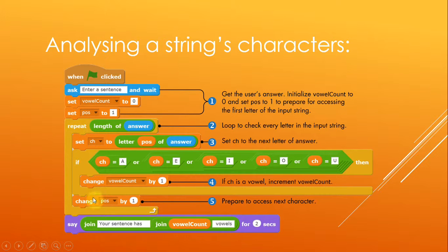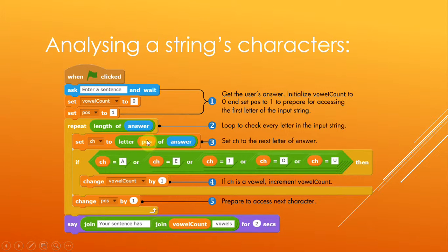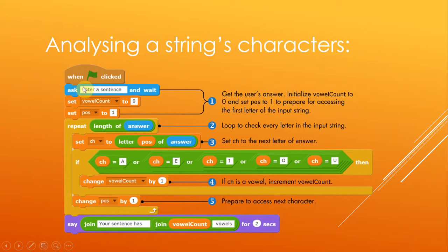It's going to repeat sixteen times. It sets the 'ch' variable — your character variable — to the letter at the current position of answer. When it comes in for the first time, position is one, so it's saying 'give me the letter at position one of my answer'. If that was our sentence, the first letter would be E. It sets ch to E, then checks if the character equals A, E, I, O, or U. Since it is E that's true, so it changes the vowel count by one — having started at zero, vowel count is now one. If not, it does nothing. Then it changes position by one, so position goes to two.